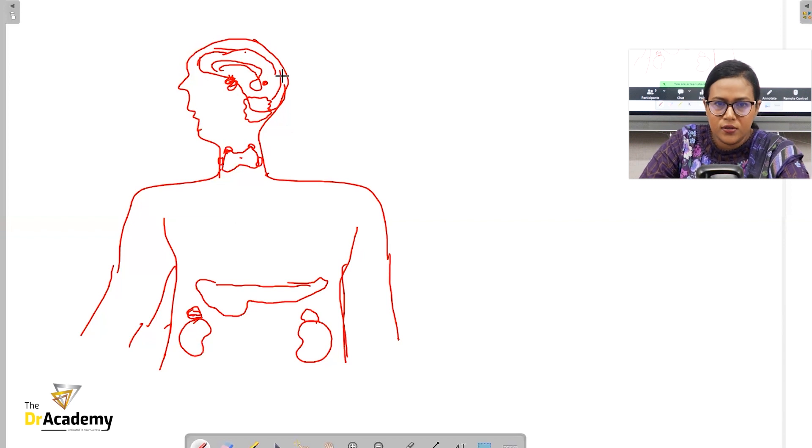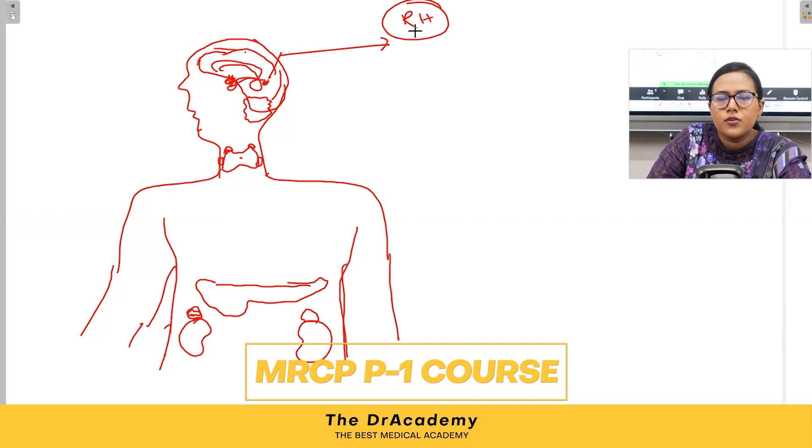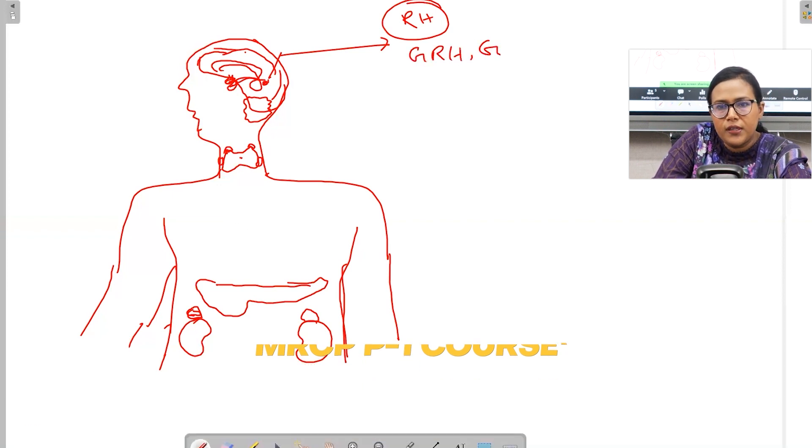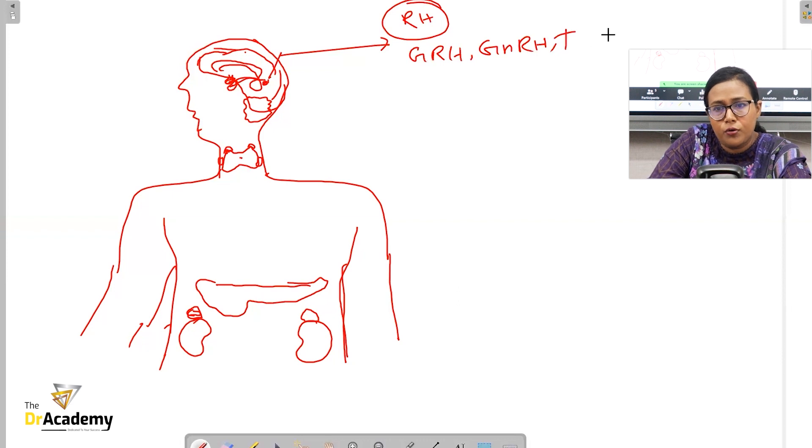We'll start from the hypothalamus. All the releasing hormones are released from here - they have connection fibers to the pituitary gland. From the hypothalamus, you'll be expecting growth hormone releasing hormone (GHRH), gonadotropin-releasing hormone (GnRH), thyrotropin-releasing hormone (TRH), and corticotropin-releasing hormone (CRH).